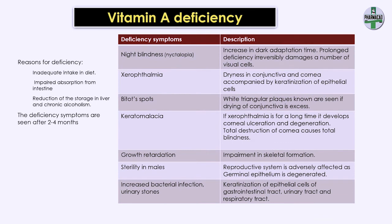Vitamin A deficiency can be due to decreased intake in the diet, impairment in absorption from the intestine, chronic alcoholism, or reduction in storage of vitamin A in the liver. It usually takes two to four months for symptoms to be manifested. The first deficiency symptom is night blindness or nyctalopia, where the individual takes a long time to adapt to dim light due to increased dark adaptation time, and this can cause irreversible damage to cells in the eye.